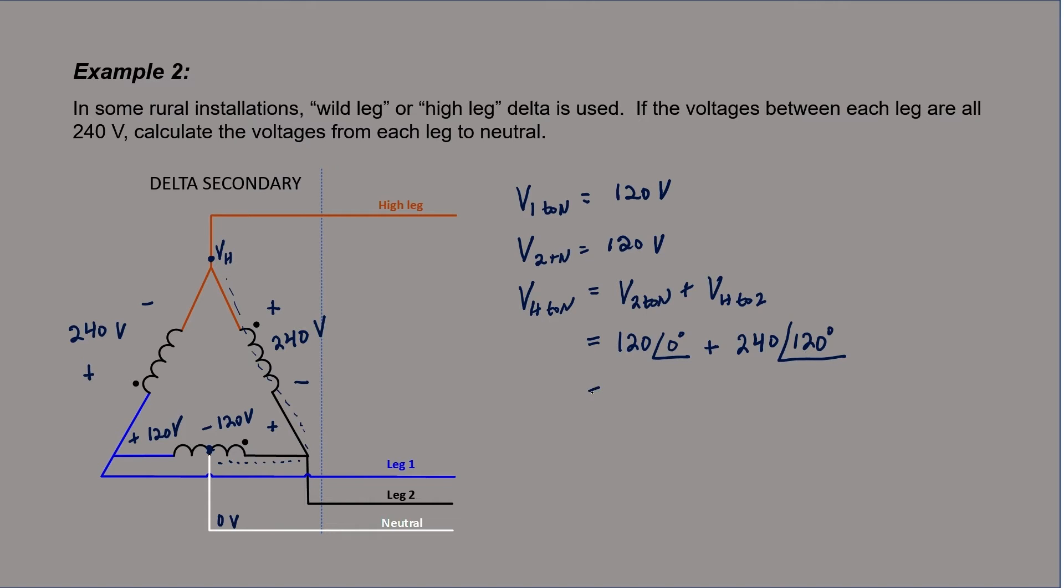It's always going to be that way. We can now convert from polar to rectangular. This is just 120, and this number is minus 120 plus 207.8j. We can see that our voltage from high to neutral is nearly 208j volts, so the magnitude of that voltage, or rather the RMS value, is just 208 volts.